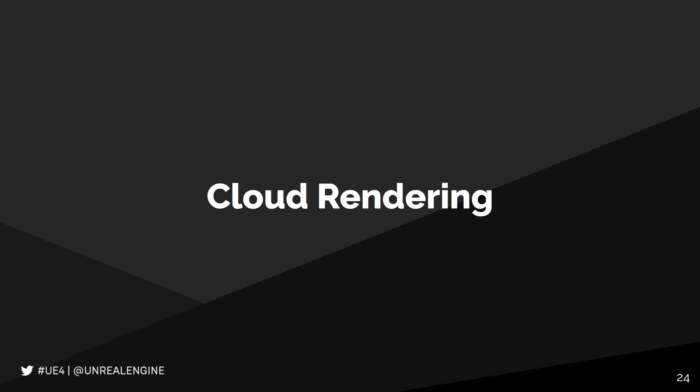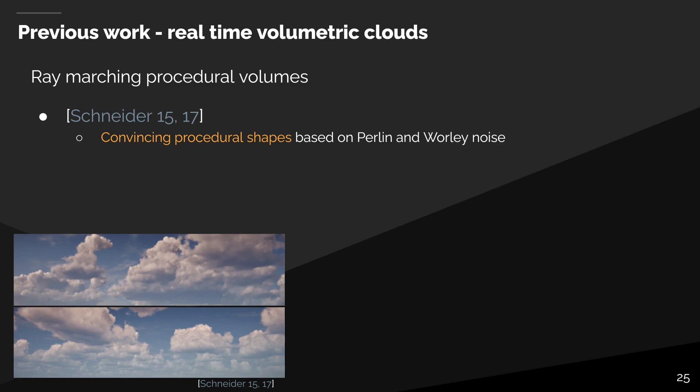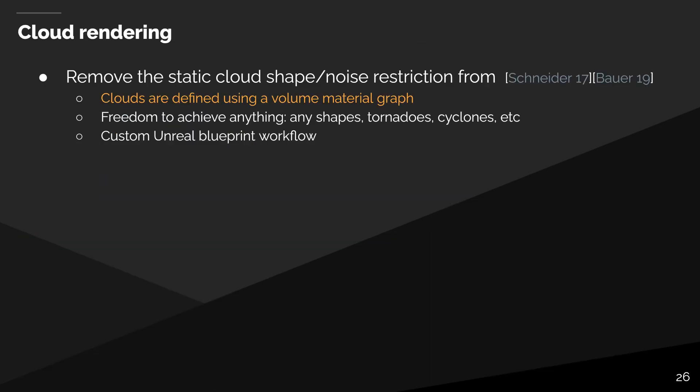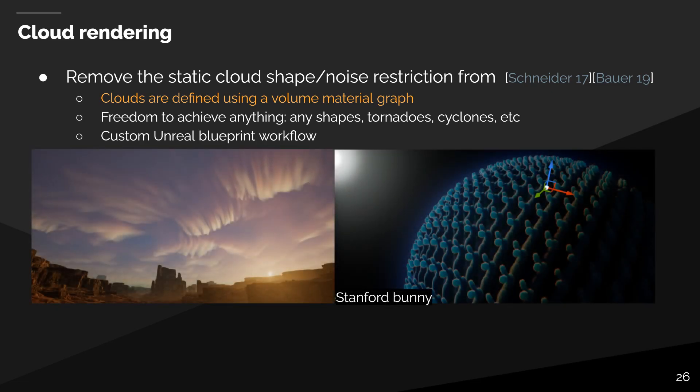Let's talk about the rendering of clouds within the atmosphere, because they are key to achieving believable skies. Recently, beautiful real-time cloud rendering implementations have successfully shipped in games. Schneider proposed a way to assemble noise primitives to render visually convincing volumetric clouds. Then Bauer presented a method improving this approach using a unified model by rendering nearby volumetric fog and clouds altogether. However, these methods rely on static ways to combine noise to represent clouds. In Unreal, the cloud layer is a volumetric material graph authored by a technical artist, and the workflow can be customized using Unreal's Blueprint — with that, one can render any cloud shape, such as tornadoes or bunny-shaped clouds.